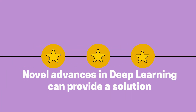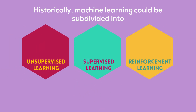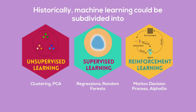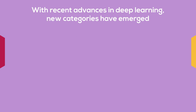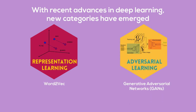Fortunately, novel advances in deep learning can provide a solution. Classical machine learning can be subdivided into unsupervised, supervised, and reinforcement learning. More recent categories include representation and adversarial learning.